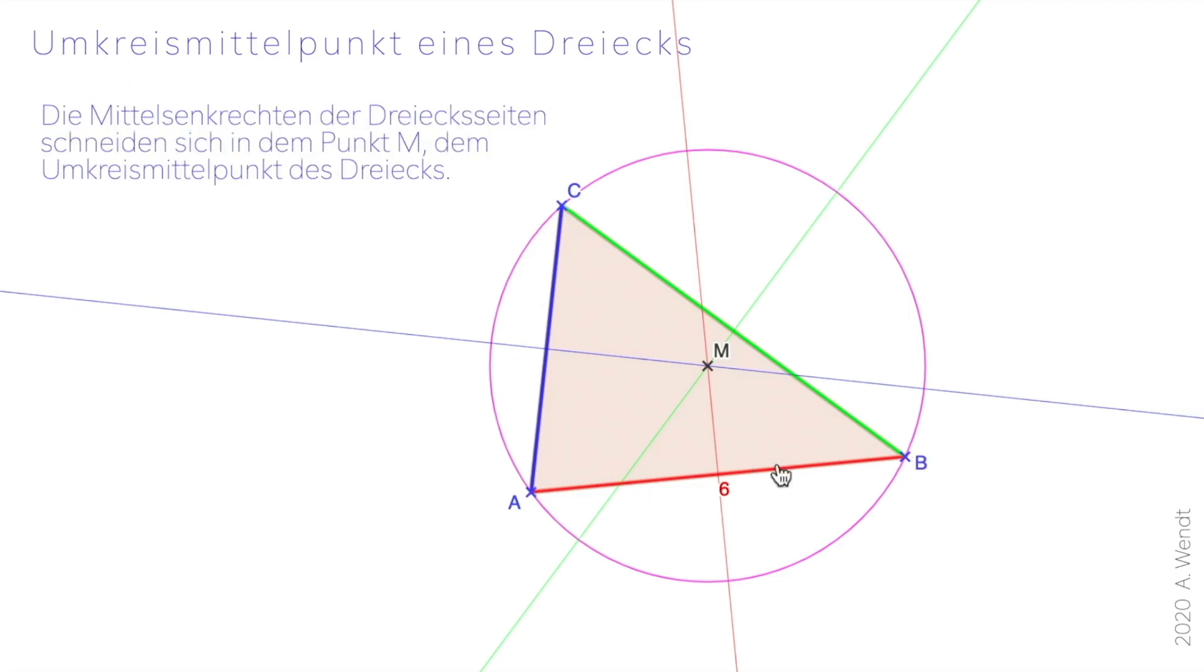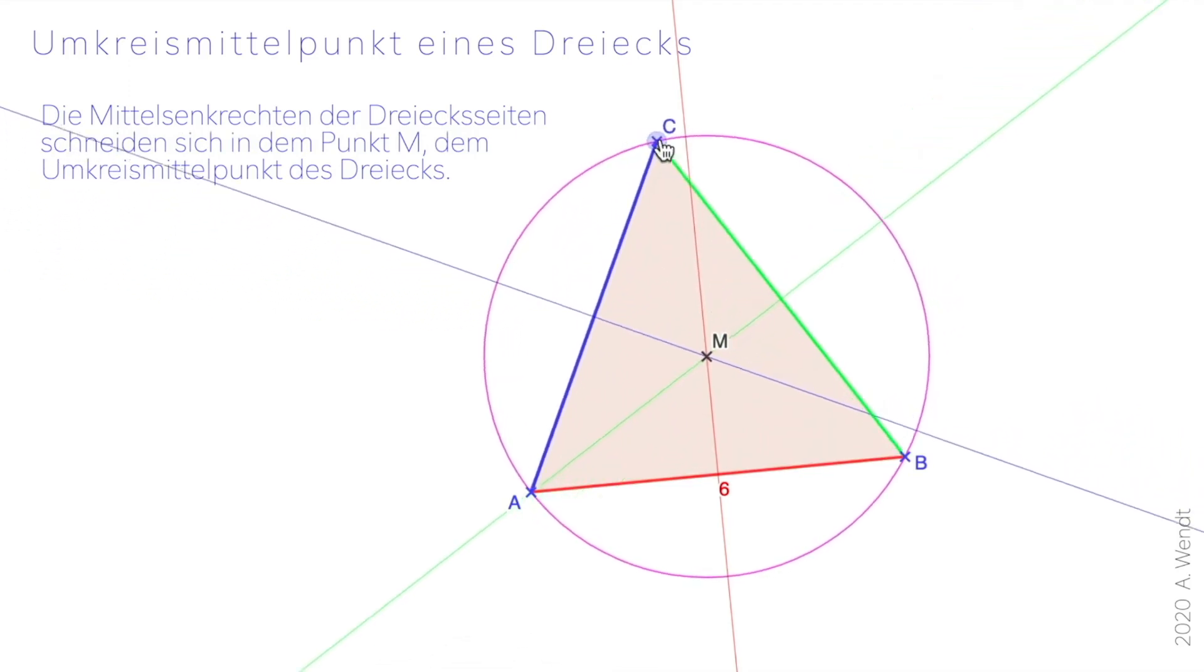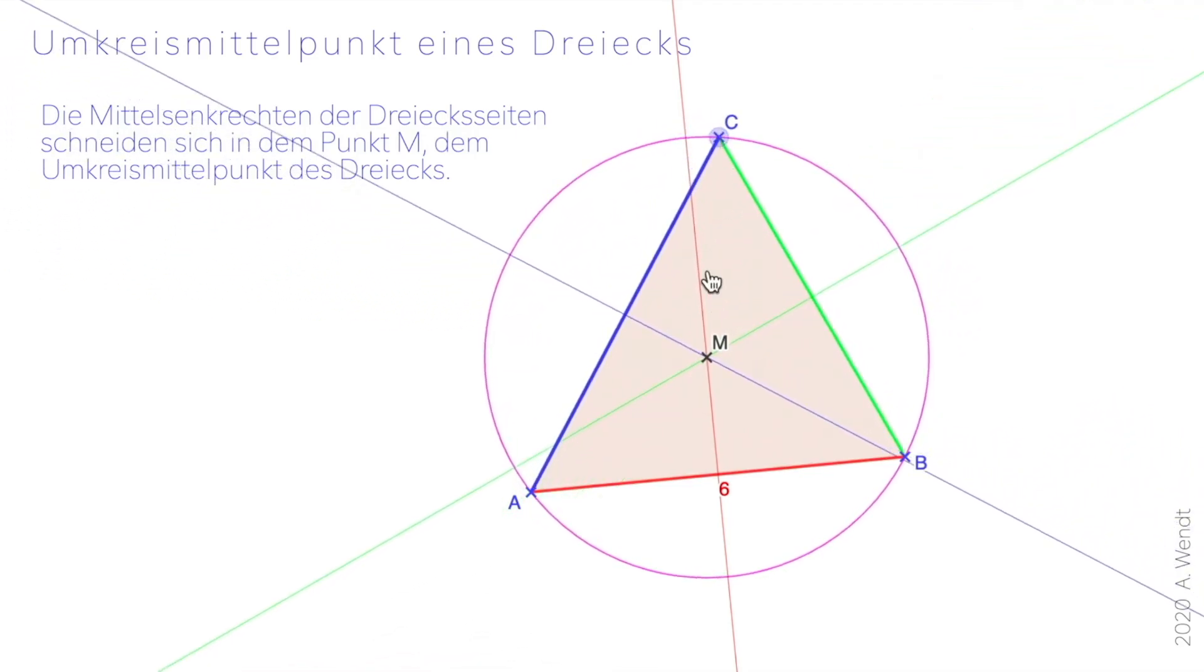Jetzt kann das ja ein Zufall sein, dass es genau nur für dieses Dreieck gilt. Deswegen manipuliere ich das Dreieck jetzt. Ich verschiebe jetzt den Punkt C. Und ihr seht, das ändert nichts daran, dass der Umkreis weiter durch die Eckpunkte des Dreiecks verläuft.